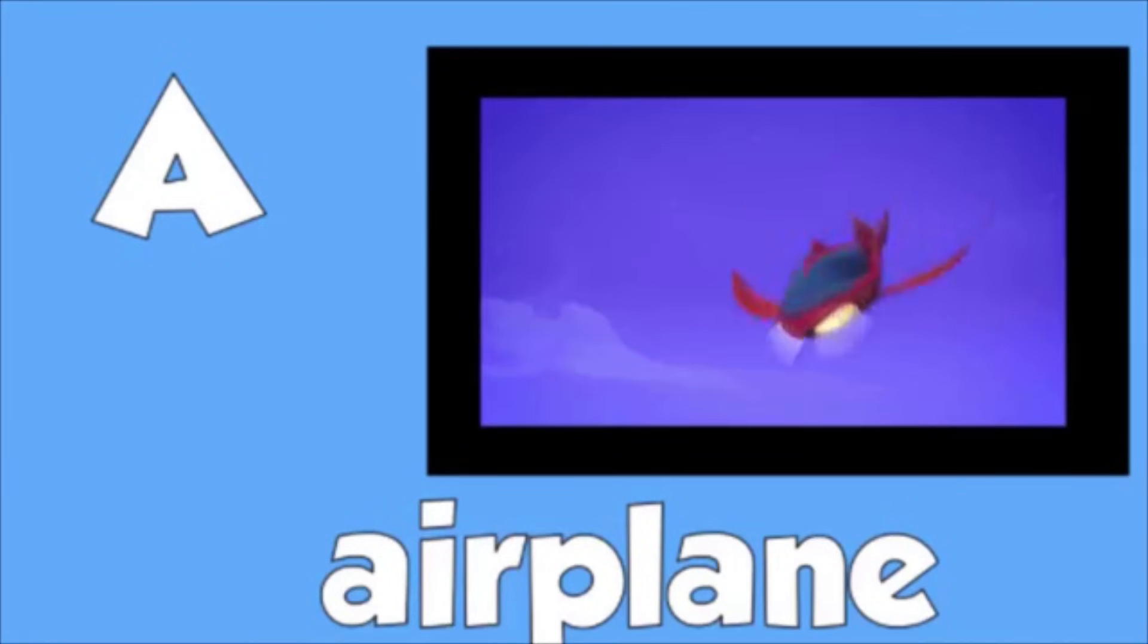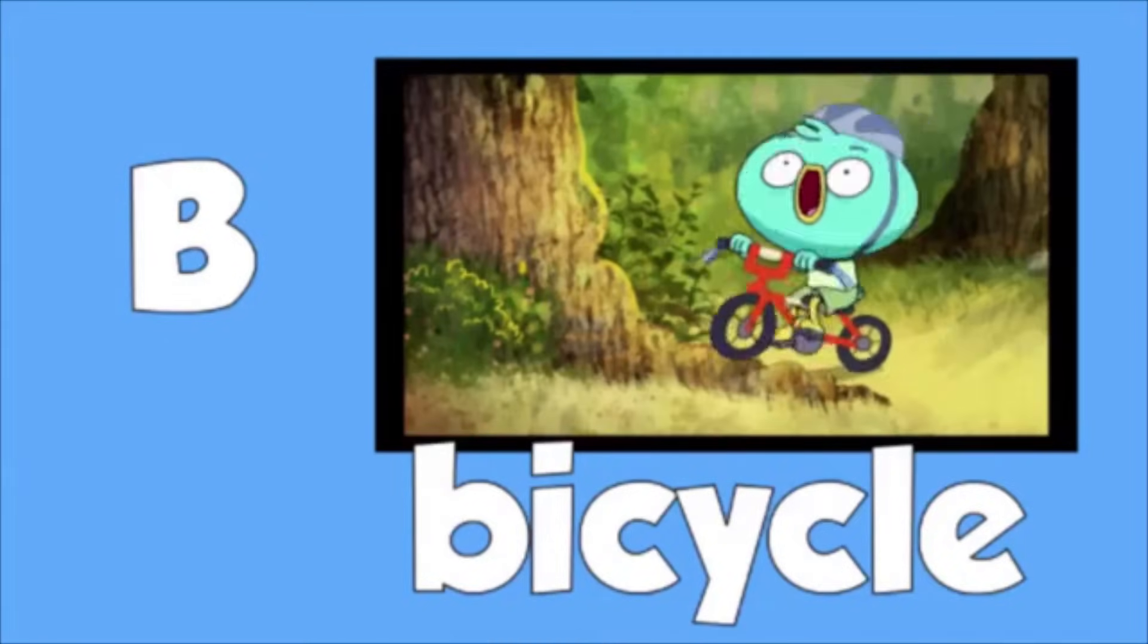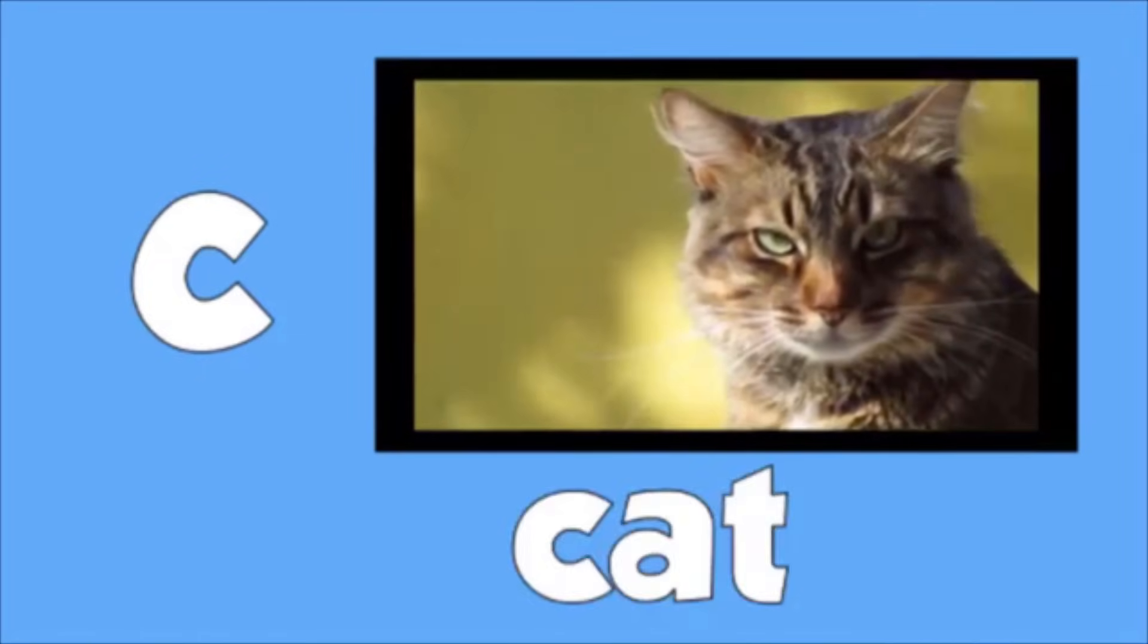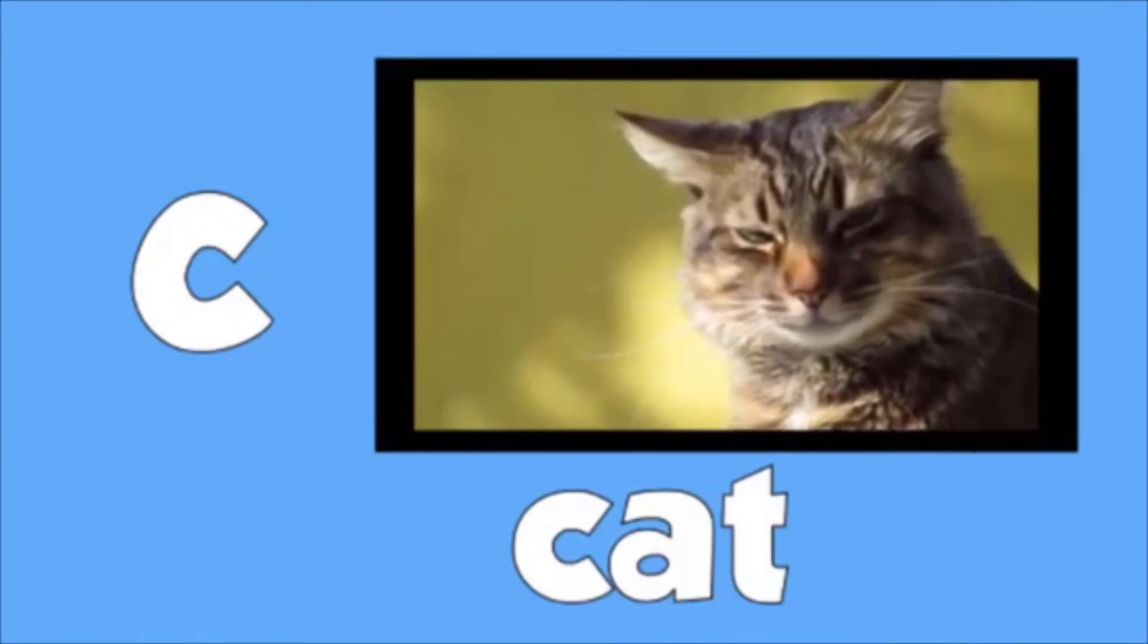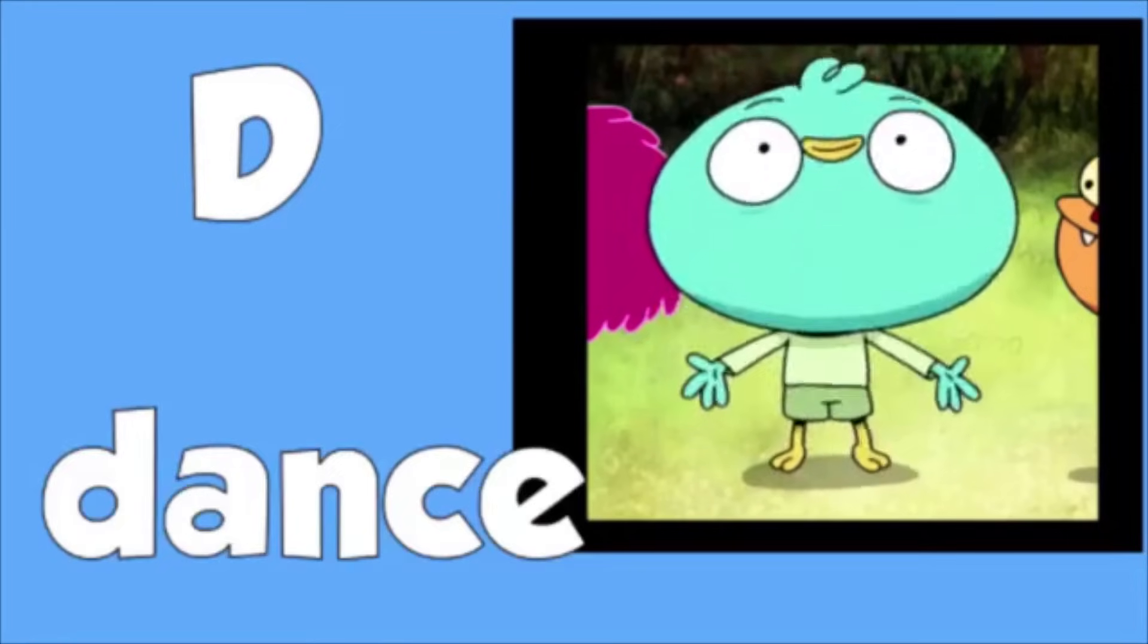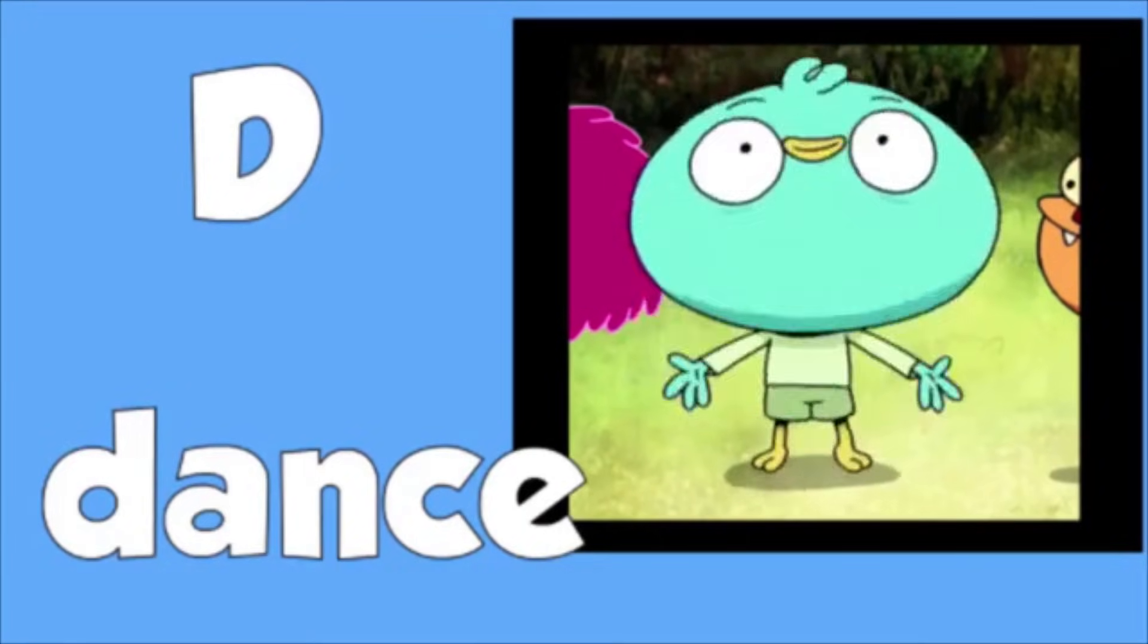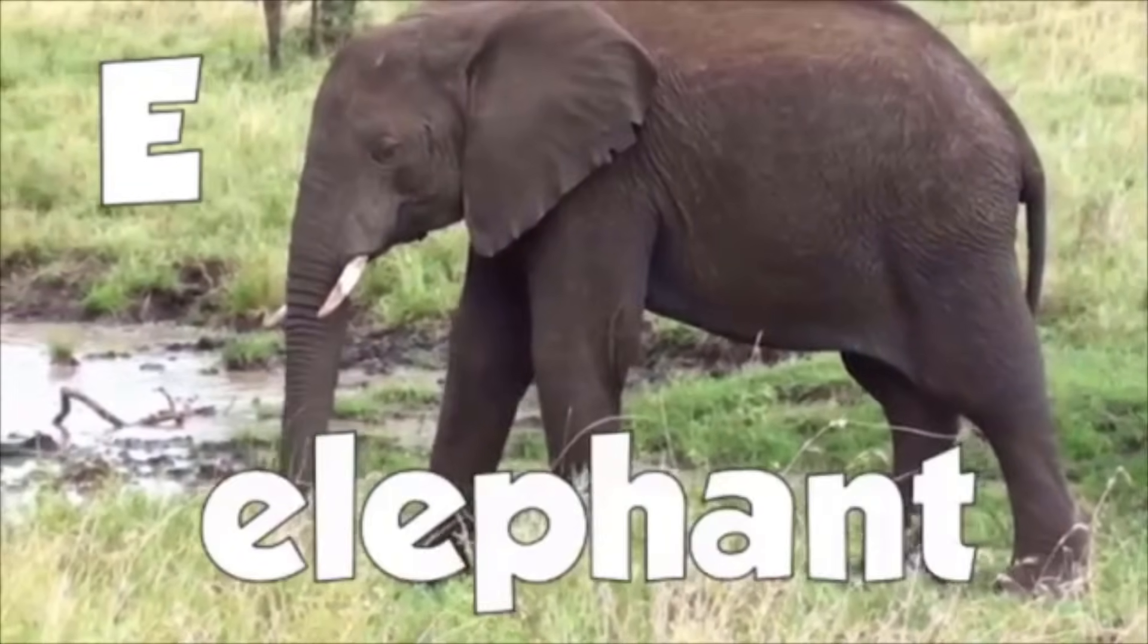A is for airplane, b is for bicycle, c is for cat, d is for dance, e is for elephant.